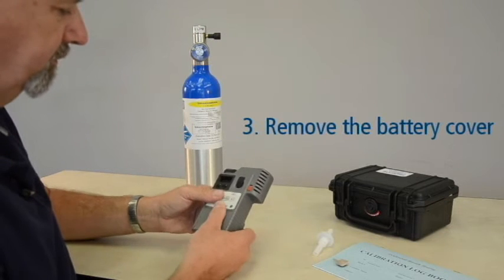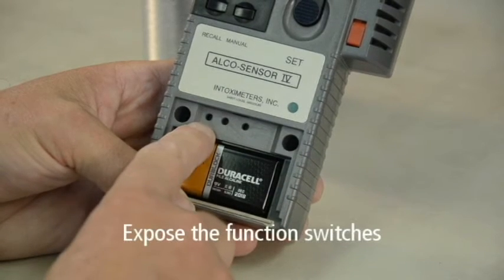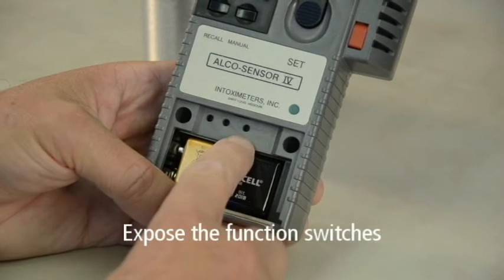Next, remove the battery cover located on the front of the device to expose the function switches, and if necessary, remove any security tape covering the holes.